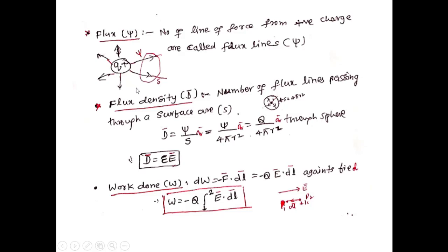When a charge is placed at some point, flux lines come out from the positive charge and go inside toward the negative charge. The number of flux lines coming out is called the flux. Flux density is defined as the number of flux lines passing through a surface S. For a spherical coordinate sphere, D bar = Q/(4π R²), since the surface area equals 4π R².